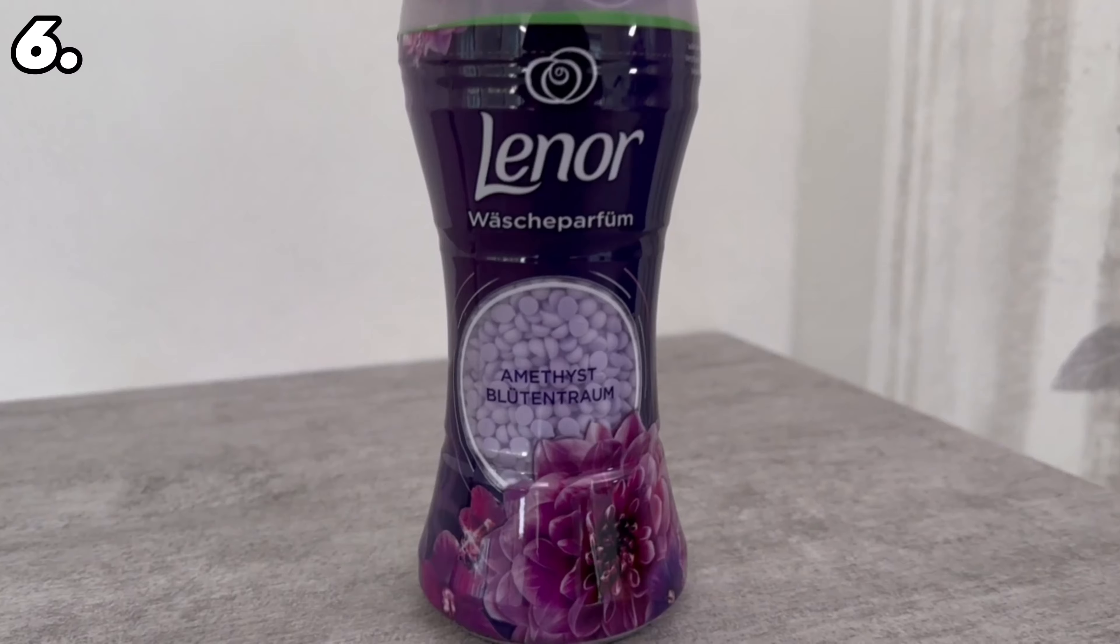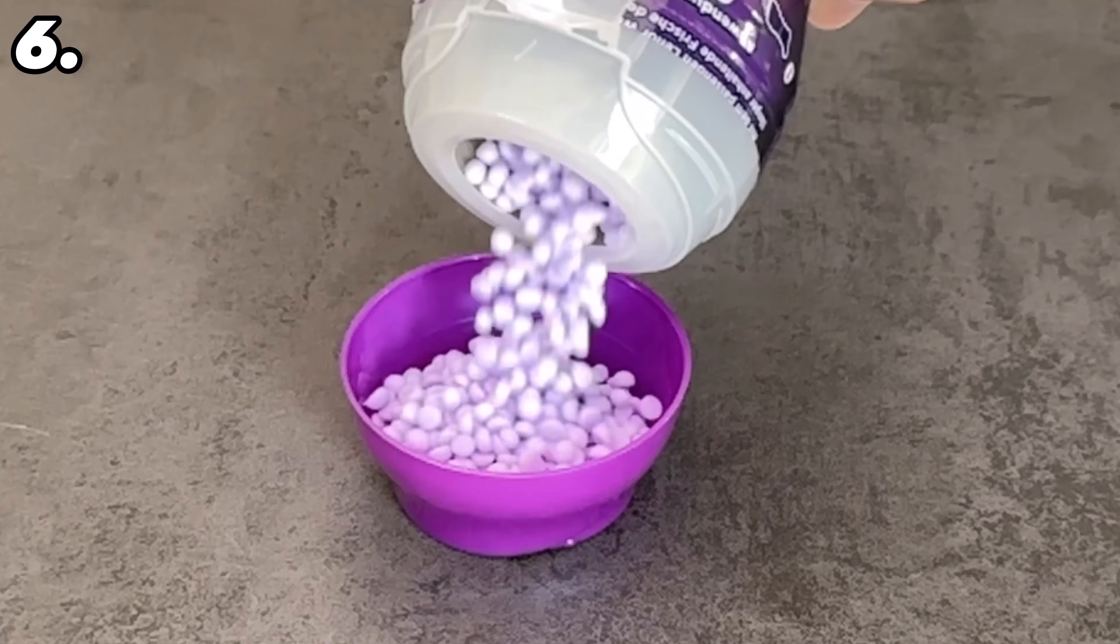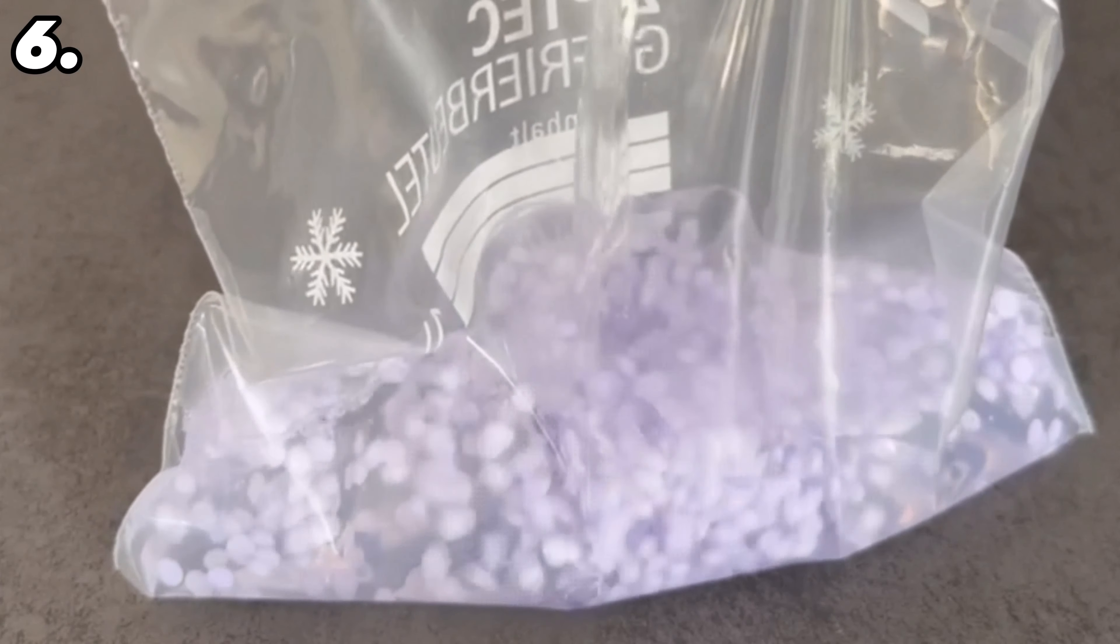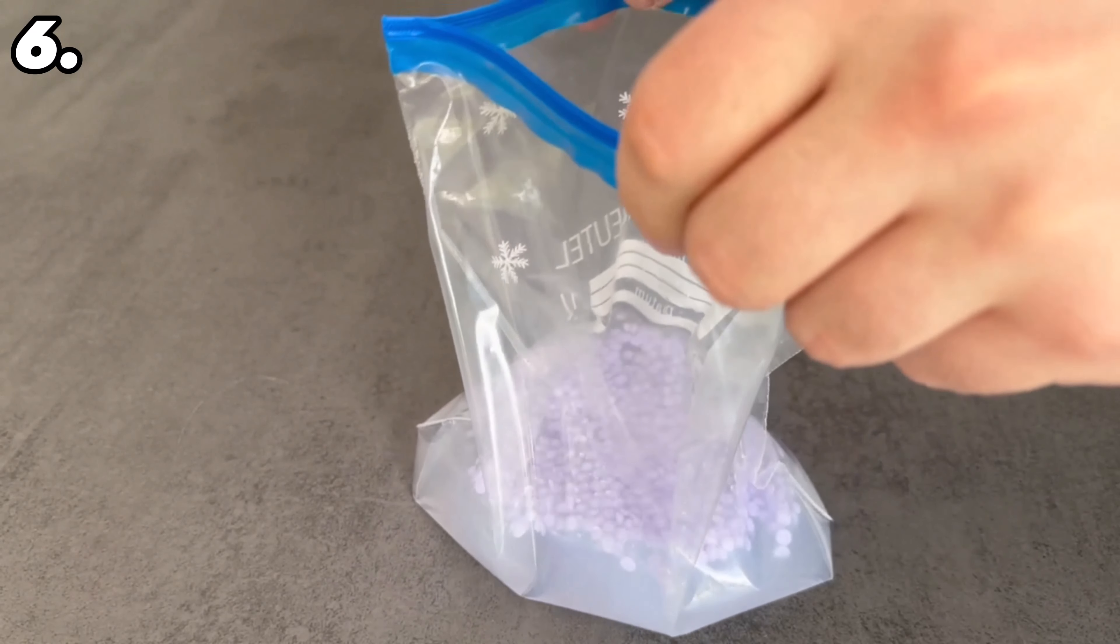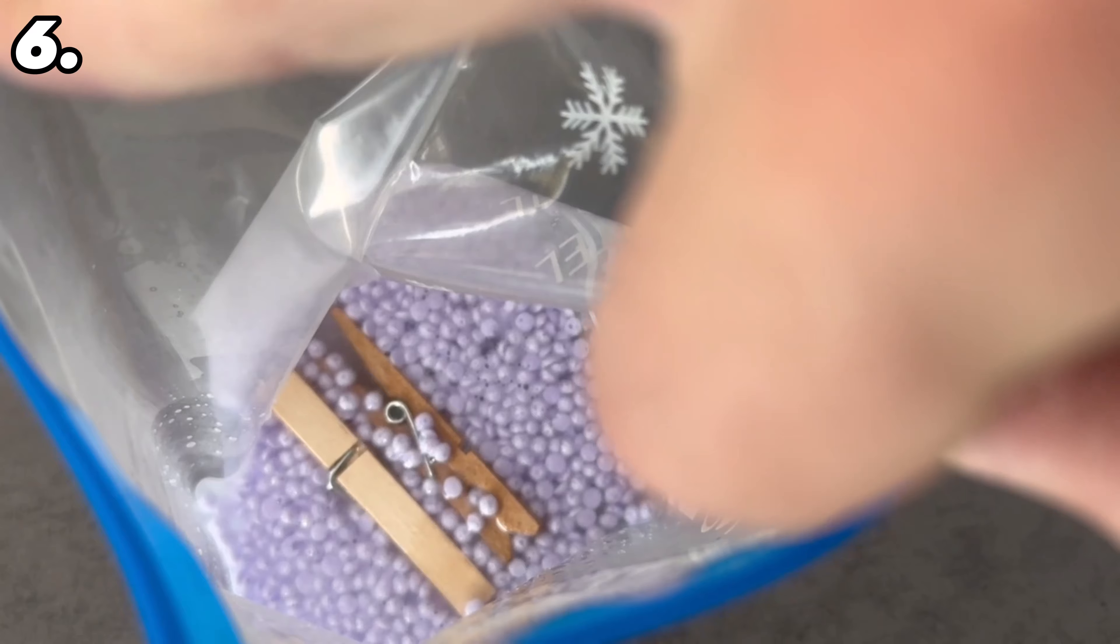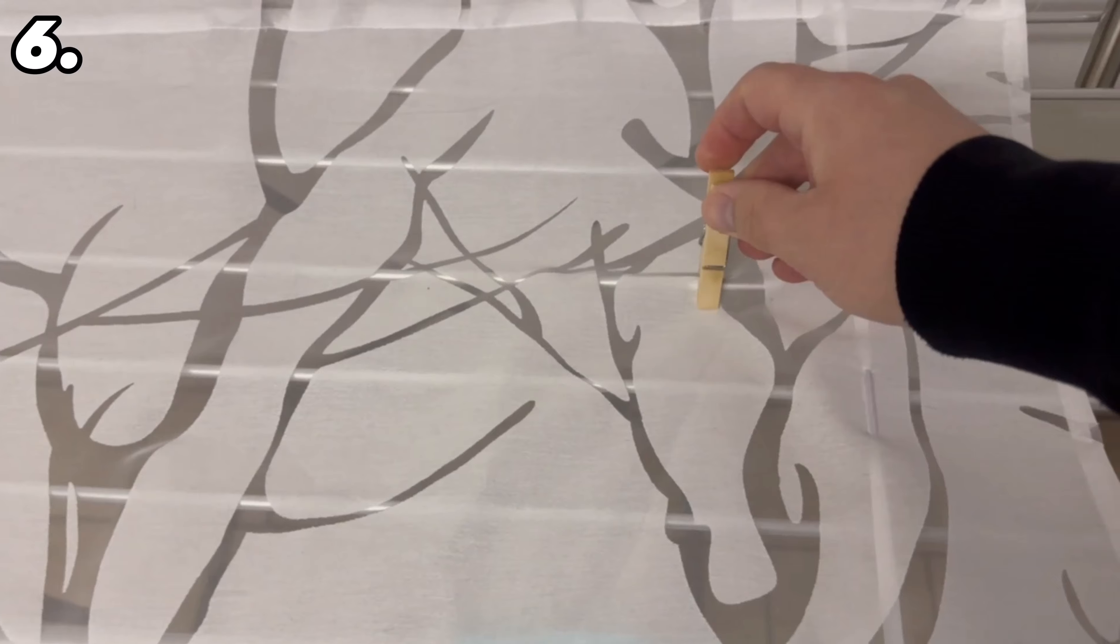You could also use laundry beads. To do this, put a small amount of laundry beads in a freezer bag, shake it well, and add a good amount of hot water. They will dissolve in the water, giving it a very intense odor. You can now add a few clothespins and leave them to soak for about 5 minutes. You could now hang them up somewhere in your home, for example on a flower pot, on your radiator, or use them to hang up your washing as normal.